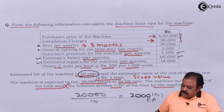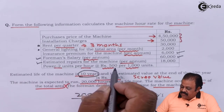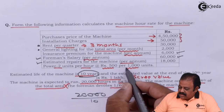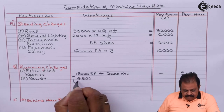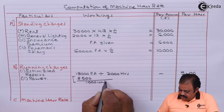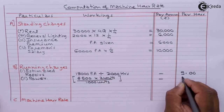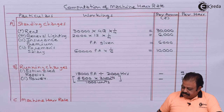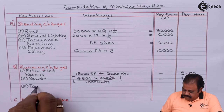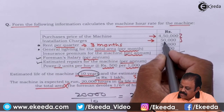The next running expense is power: 2 units per hour at the rate of 500 per 1,000 units, which gives rupees 1 per hour.